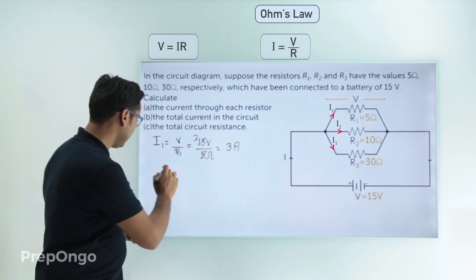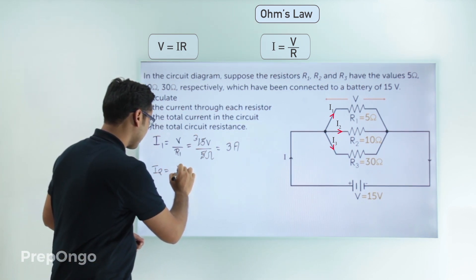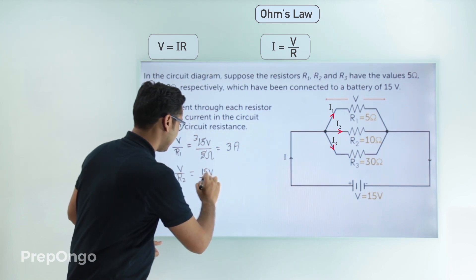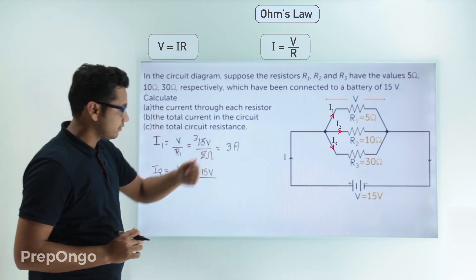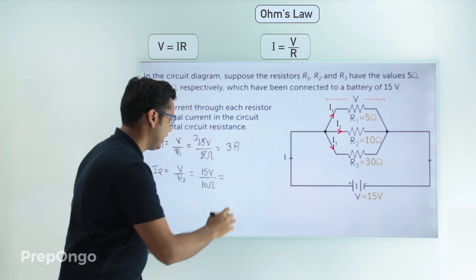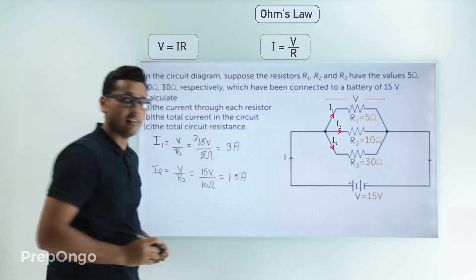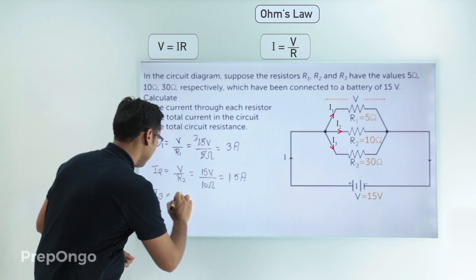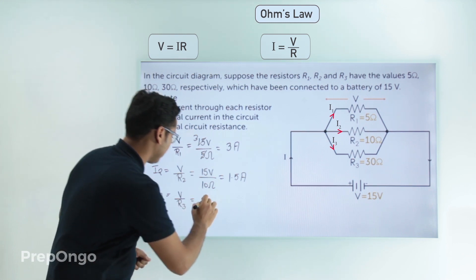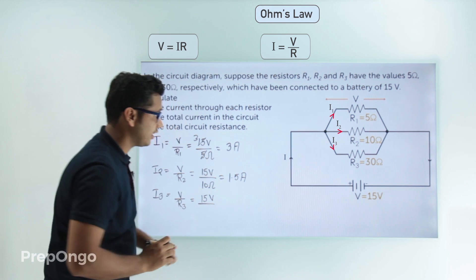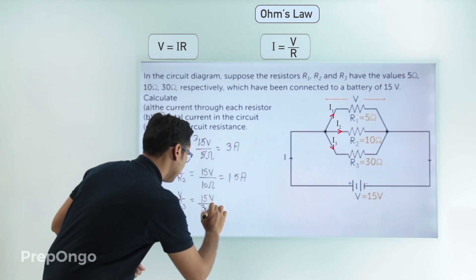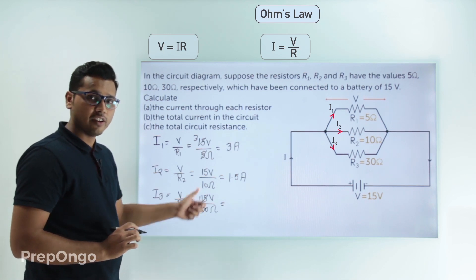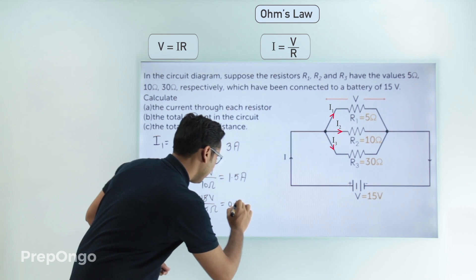Similarly, for R2: I2 = V/R2 = 15/10 = 1.5 amperes. And for R3: I3 = V/R3 = 15/30 = 0.5 amperes. This is how we calculate the current through each of the three resistors.